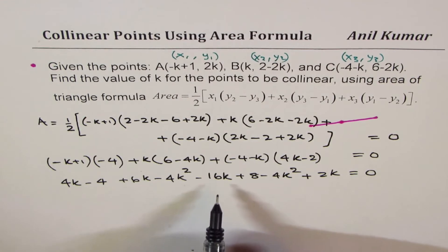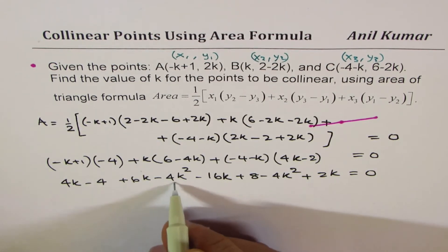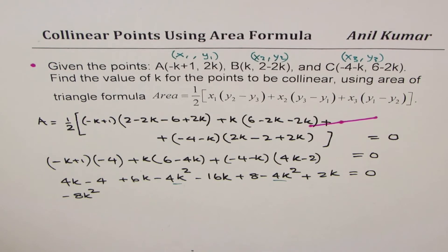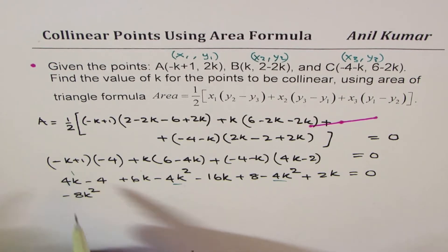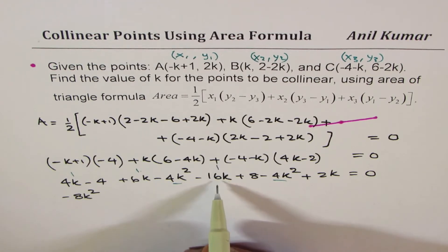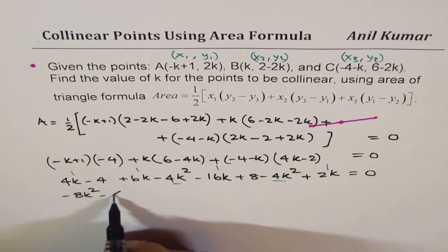Let's combine the like terms now. We get, let's count the k squares first. So we'll go in order, we'll take higher powers first, we'll take k squares first. So that gives us -8k². Now let's count k's. So we have 4k+6k which is 10k, 10-16 means -6k, -6k+2k will give us -4k. So we get -4k now.